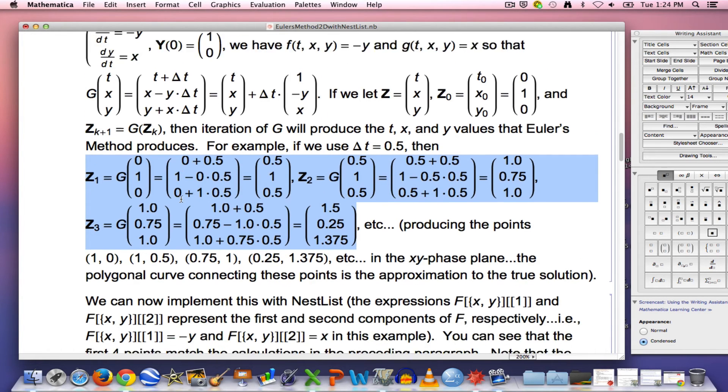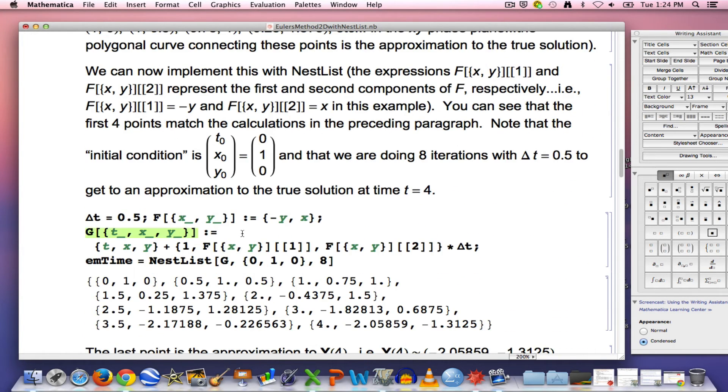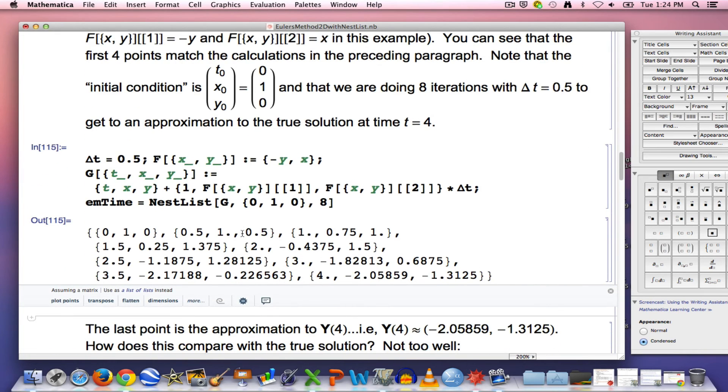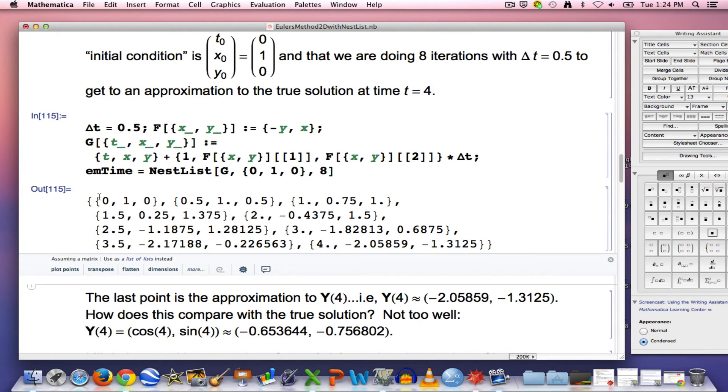I can now use nest list to run this quickly to get these points. Here, initially, they have time involved, 0, 0.5, 1, 1.5, etc., because these are three-dimensional.